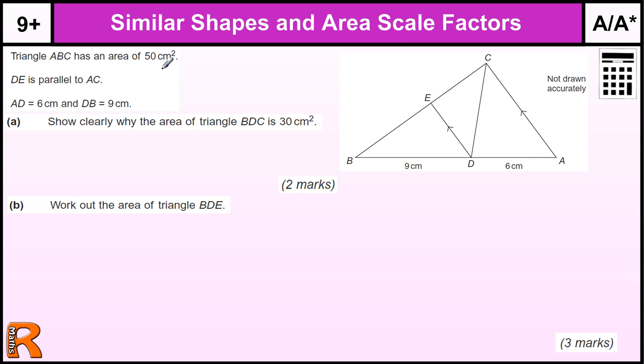The first part we're told the area of ABC is 50, DE is parallel to AC, AD is 6, DB is 9. So we're told those things show clearly why the area of triangle DBC is 30. So why is this triangle's area 30, and this one therefore would be 20?